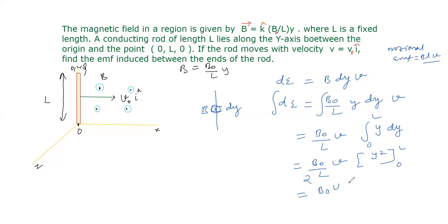By substituting, B0 × v0 - this v is v0 velocity - so that v0 × L²/2 × L. We write here. Now we cancel this L. By cancelling this L, we get induced EMF across the ends of the rod.